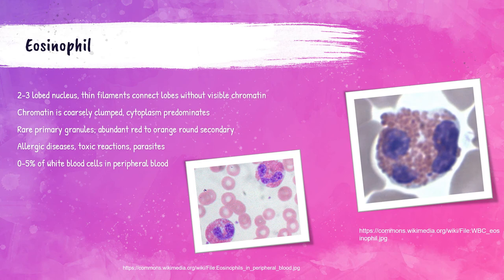Eosinophils account for zero to five percent of the total white blood cells in the peripheral bloodstream. They are commonly associated with allergic or toxic reactions and parasitic infections. They have a coarsely clumped purple two- to three-lobe nucleus with thin filaments connecting those lobes. The characteristic feature of eosinophils is their abundant red to orange round granules within their cytoplasm, as seen in the pictures here. Eosinophils are one of my favorite cells — I think they're really beautiful.